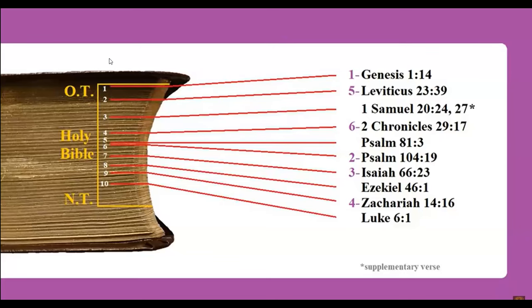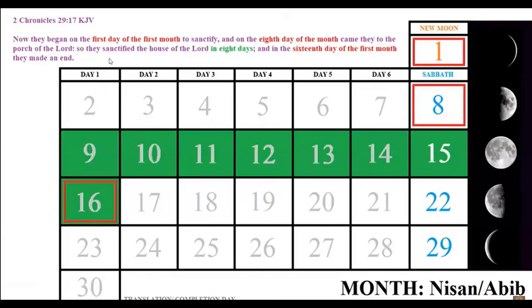Everything fits perfectly. Can you apply the same verse to the Gregorian calendar? I don't think so. 2 Chronicles 29: 'Now they began on the first day of the first month to sanctify, and on the eighth day of the month came they to the porch of the LORD: so they sanctified the house of the LORD in eight days; and in the sixteenth day of the first month they made an end.' Again, no confusion and no need for mental gymnastics because this Creator's calendar is well synchronized with Bible verses.